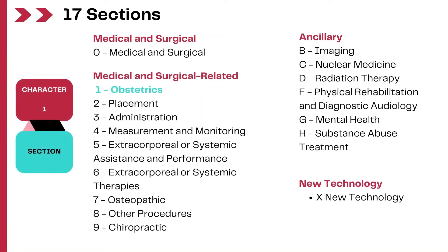There are 17 sections overall in the PCS, and in this video we will specifically talk about the obstetrics section. Remember, multiple codes from different sections can be reported together based on the combinations of procedures performed.